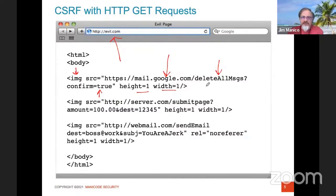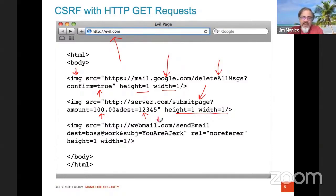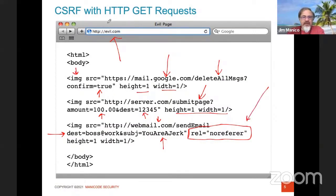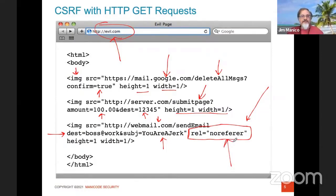Here I have a server where I'm transferring money for a bank account. I'm hiding the artifact doing the request forgery so the victim can't see it. Down here I have a webmail program automatically sending a nasty email to my boss, and I'm using rel=noreferrer — a standard attribute for a link that says don't send the Referer header. Because the Referer header would say evil.com, revealing where the attack was hosted. This is also why request forgery is hard to track in data — it's easy for me to hide my tracks as an attacker, making forensics non-trivial.